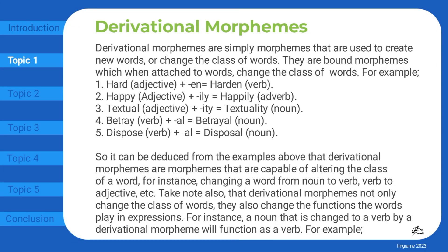Derivational morphemes are simply morphemes that are used to create new words or change the class of words. They are bound morphemes which, when attached to words, change the class of words.